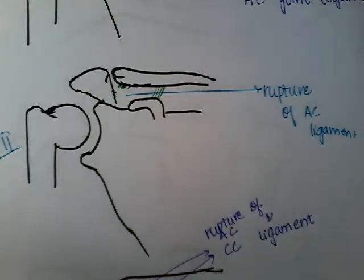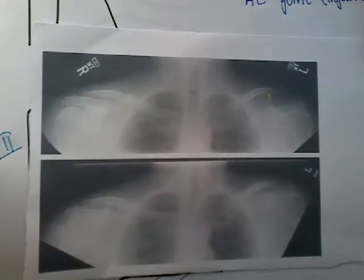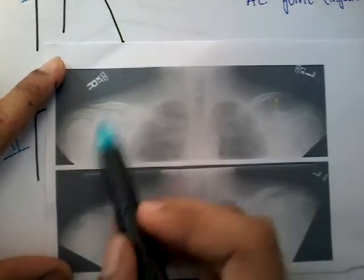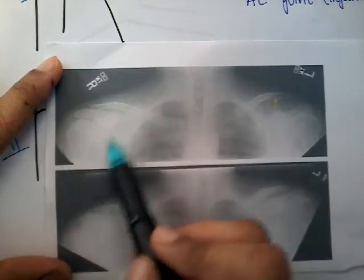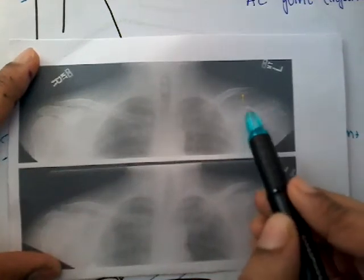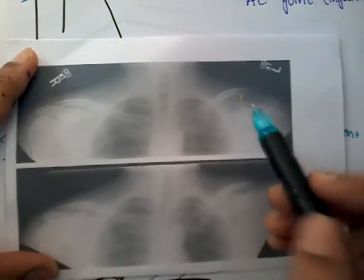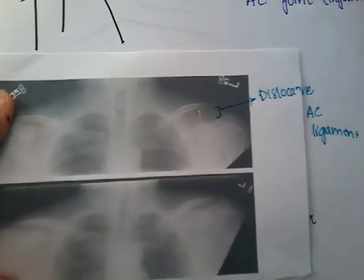We then take an X-ray. On this X-ray you can see the clavicle, scapula, humerus, and ribcage — this side is normal. On the affected side you can see the clavicle, scapula, coracoid process, and acromion process. Notice the increased free space between them — this is the dislocation of the acromioclavicular joint that we see on X-ray.